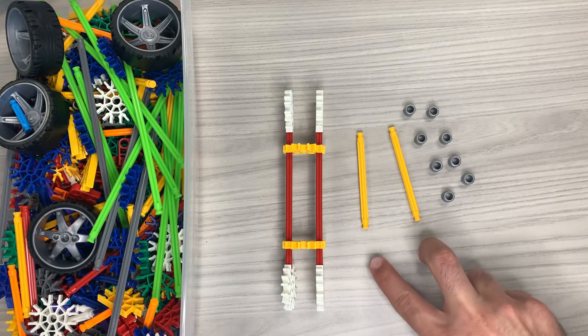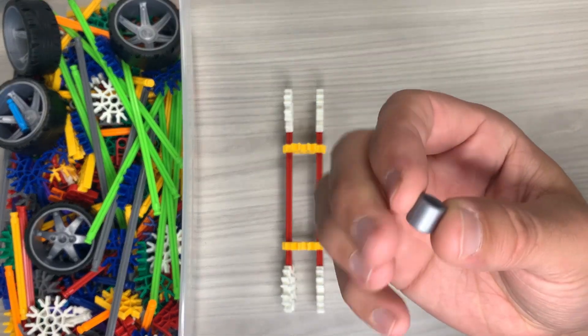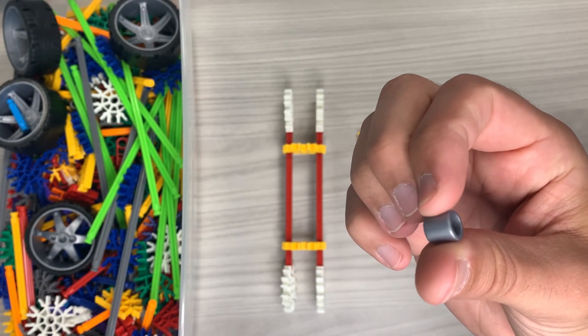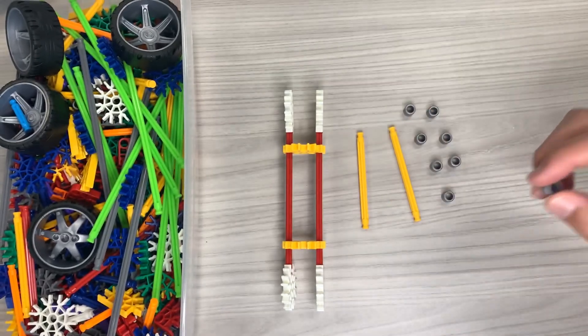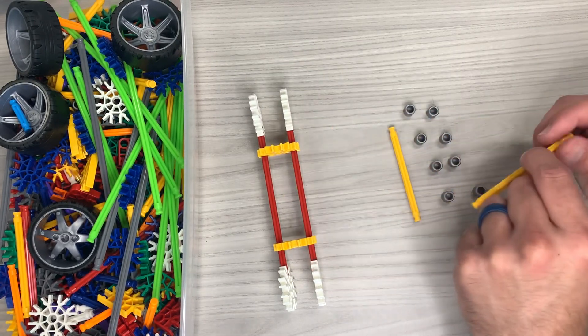All right for our next step we're going to need two of the medium-sized yellow rods and then eight of these tiny little pieces which are kind of like big washers or spacers is what I like to call them. That's just going to help us with the tires that we're going to be making.